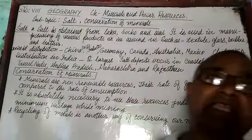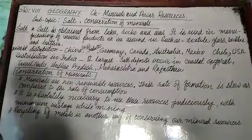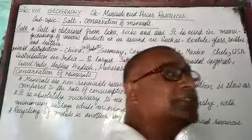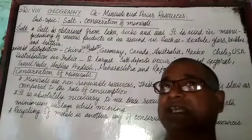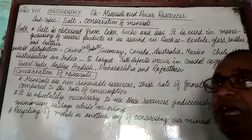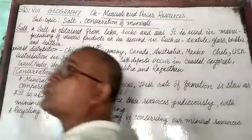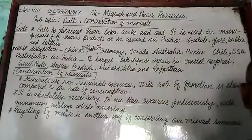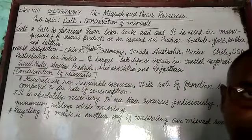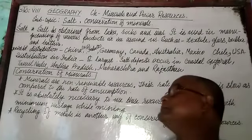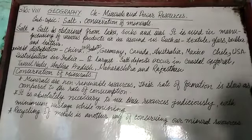राजस्थान किसी समुद्र के किनारे नहीं है, मगर राजस्थान में large scale पर नमक बनाए जाते हैं। वहाँ पर नमक रॉक के रूप में पाया जाता है — चट्टानों को काटकर यूज़ करते हैं। इसे सेंधा नमक कहते हैं जो घर में पूजा पाठ के दिनों में उपयोग होता है।